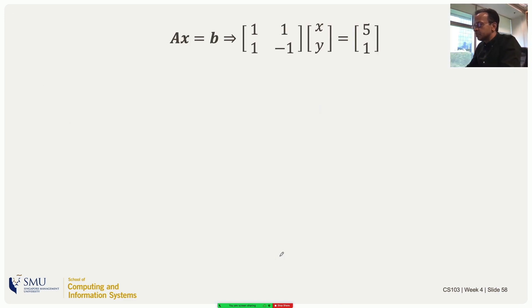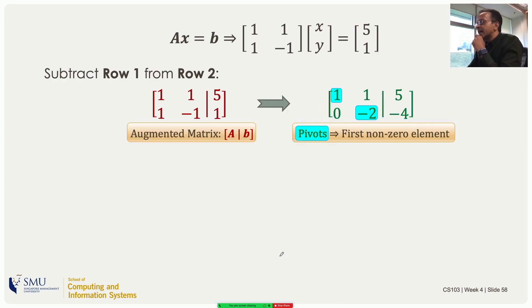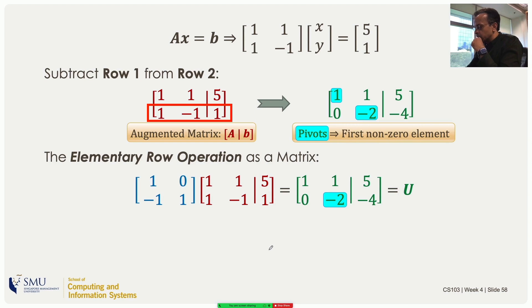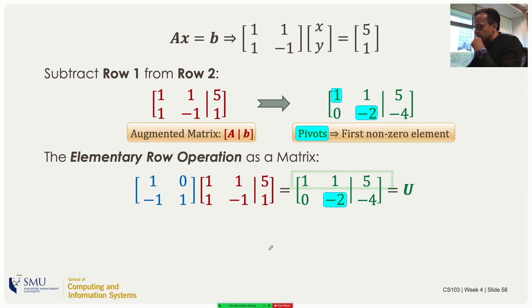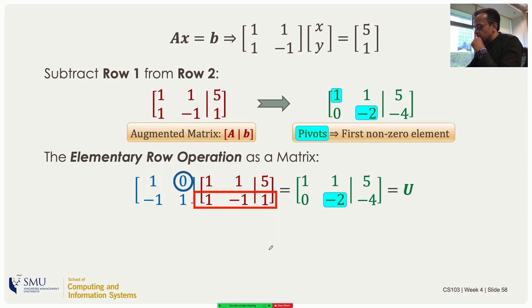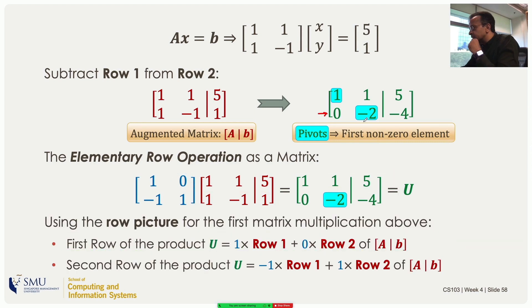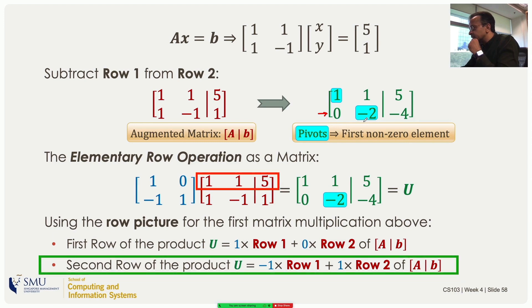Starting with the augmented matrix, suppose we want to subtract the first row from the second row. The new second row will be the current second row minus the first row. The first row of the product is unchanged — it's a linear combination using one of the first row and zero of the second row. The second row is more interesting: it's one times the second row minus one times the first row.